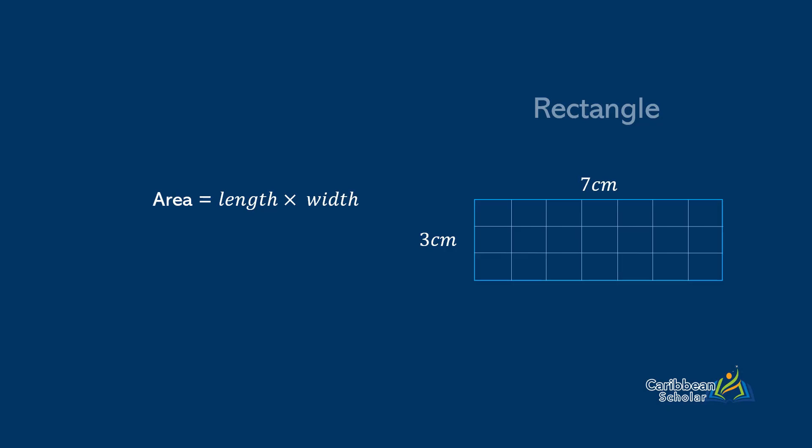Okay, so the area of a rectangle is the product of its length by its width. In this case, that would be 3cm by 7cm, and this gives us 21cm², just like we had before.